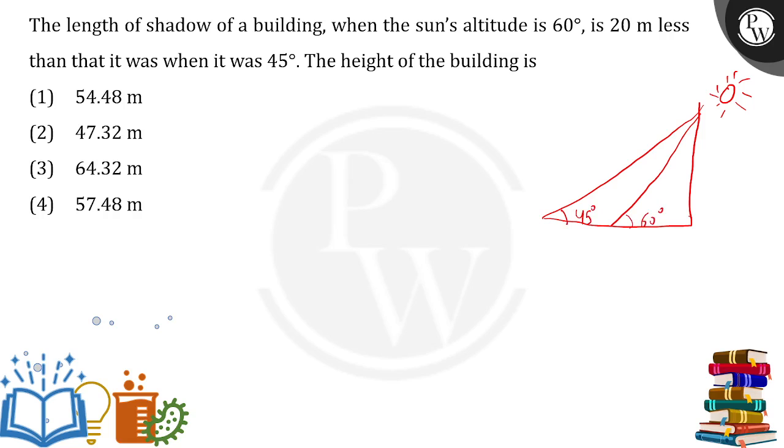What they are saying, they are mentioning that it's 20 meters less when it was 45 degrees, 20 meters less. So basically the distance between these two points will be 20 meters. 20 meters less simply means this. Now what they are asking, they are interested in the height of the building. That means this.